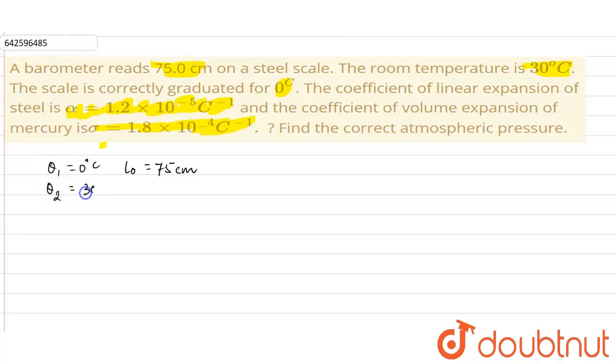So the room temperature is 30 degree Celsius. So let us suppose the barometer reads L theta at 30 degree Celsius.